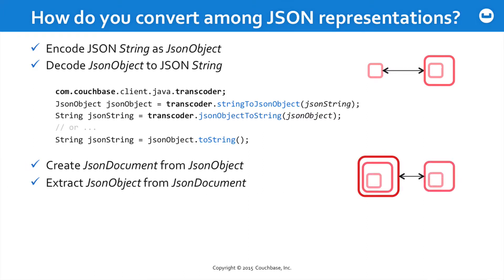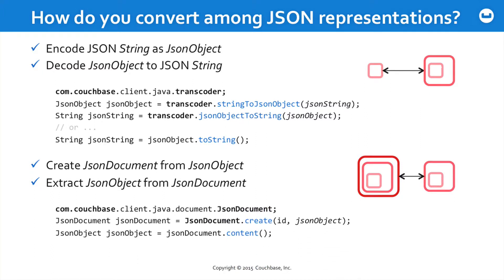What about the JSON document class? It's the document you're going to be handing off to Couchbase — it includes the necessary metadata. You can create a JSON document from a JSON object or the reverse. The JSON document class is part of our SDK and includes a create factory method for taking a JSON object and assigning it metadata, such as its document ID. If you need to reverse the process and extract a JSON object back out of a JSON document, just call the content method and you get back the JSON object.